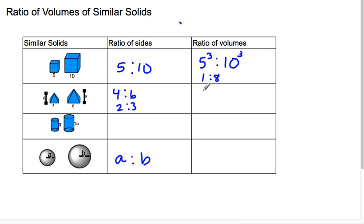So that means the volumes then, if I take 1 third times 4 squared times 6 and I divide that by 1 third times 6 squared times 9, that will simplify down to 8 to 27.